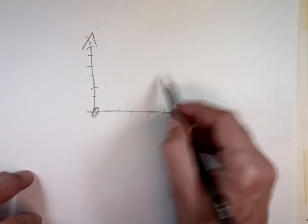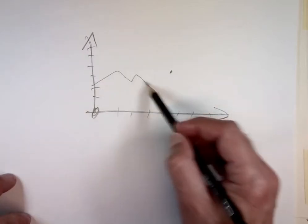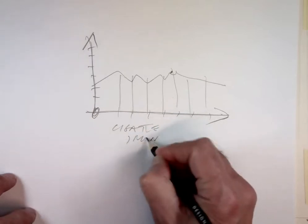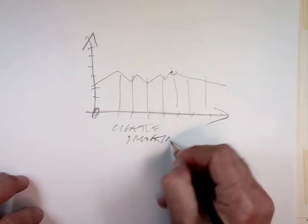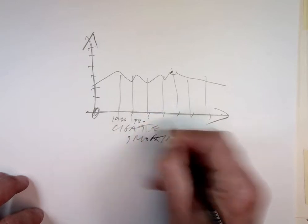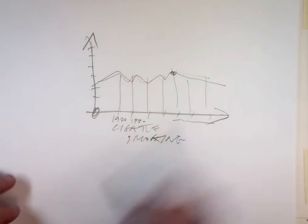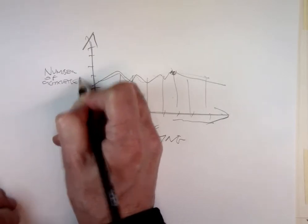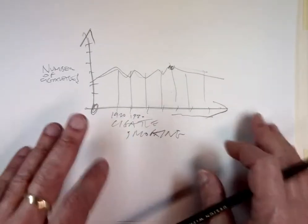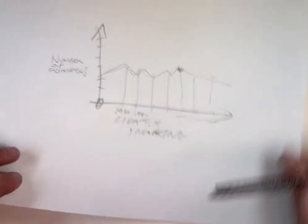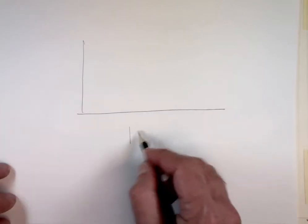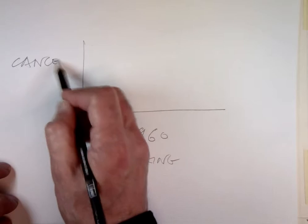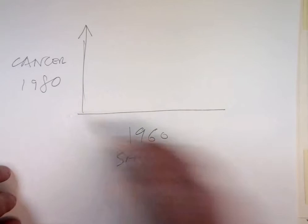You could have one type of data — so maybe consumption, or maybe cigarette smoking for different years. That's one, very single type of data — I think it's called monovariate. So 1920, 1930, et cetera, and that tells a story: the position tells you how much. So maybe this is number of cigarettes.